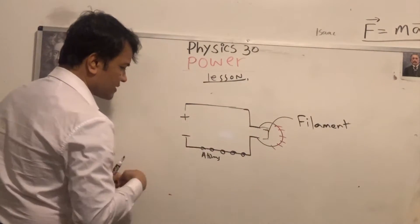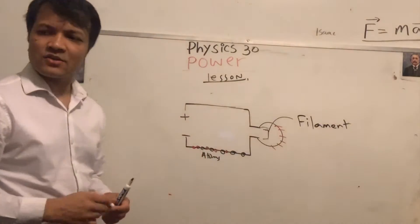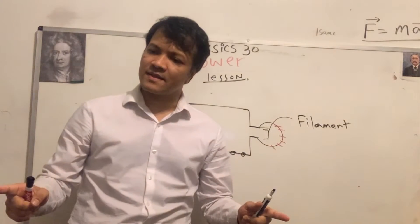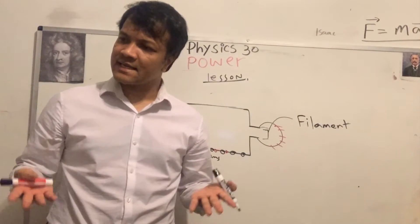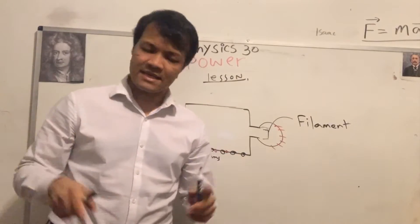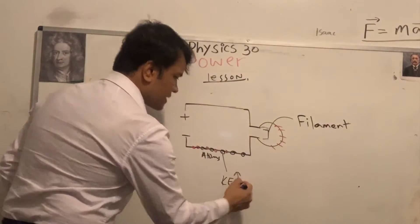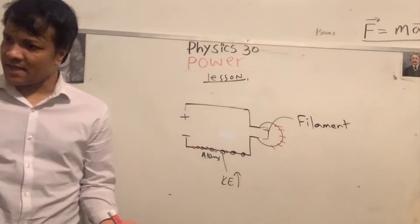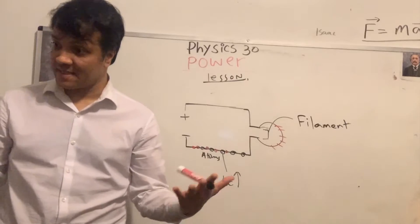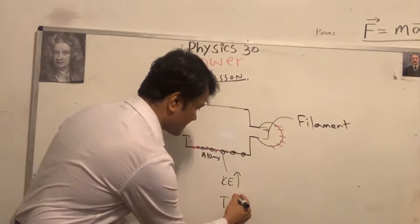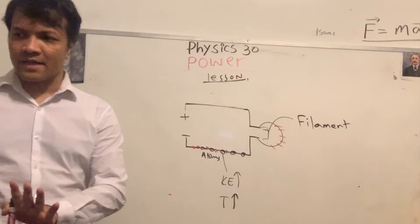The electron loses energy because electrons collide with atoms. When electrons collide with atoms, the kinetic energy of the atoms increases. As kinetic energy increases, temperature increases.